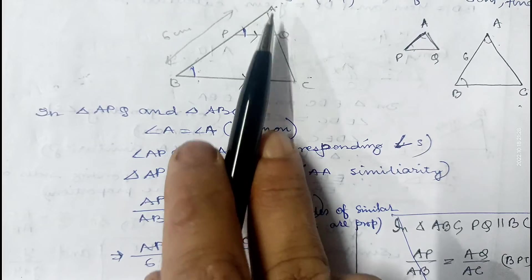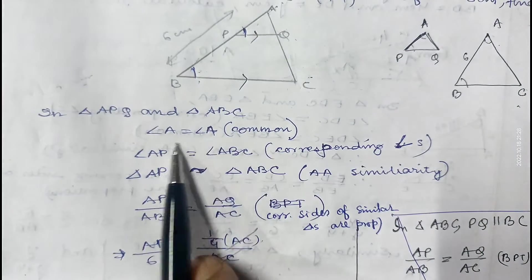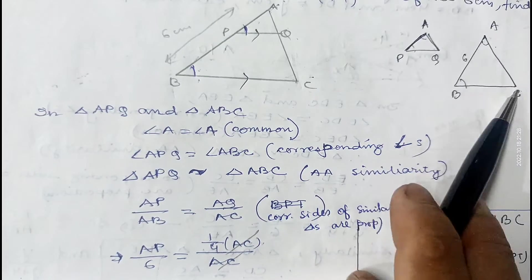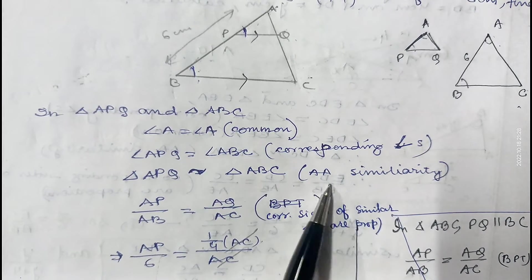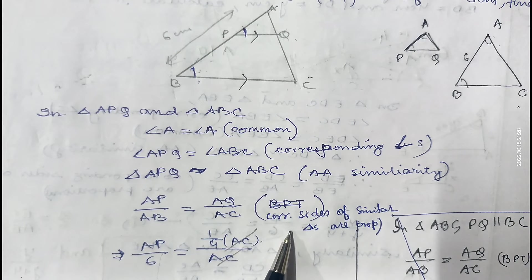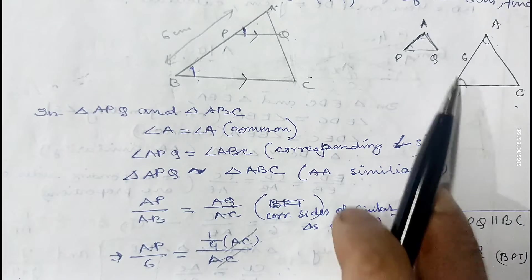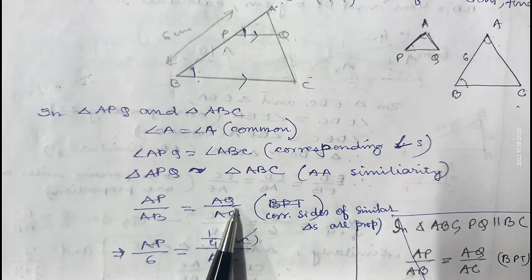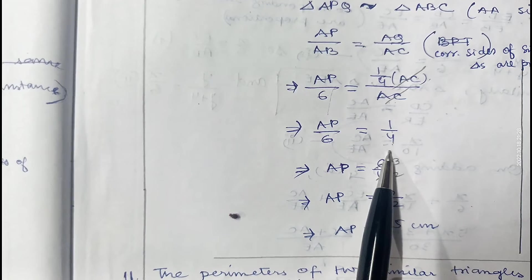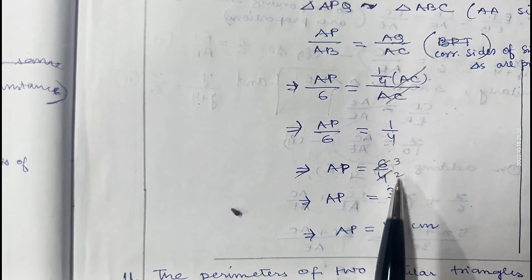In triangle APQ and triangle ABC: angle A equals angle A (common), and angle APQ equals angle ABC (corresponding angles, since PQ is parallel to BC). Therefore triangle APQ is similar to triangle ABC by Angle-Angle similarity. Since the triangles are similar, corresponding sides are proportional: AP by AB equals AQ by AC. AP is unknown, AB is 6, and AQ equals one-fourth of AC, so AQ by AC equals 1 by 4. Therefore AP by 6 equals 1 by 4, giving AP equals 6 by 4.